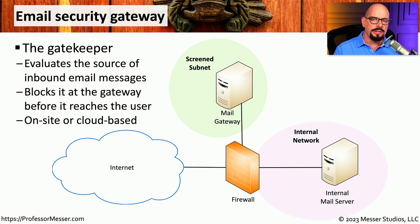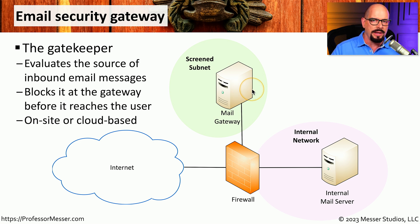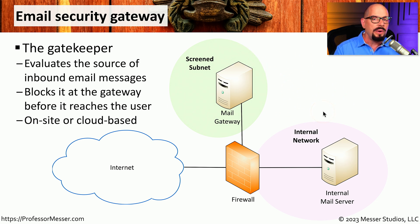Email is a very popular vector for attacks — we can send information in an email to get someone to click a malicious link, or attach malicious software to the email message itself. For that reason, many organizations monitor all of their email transactions and look for any type of malicious software or information contained within those messages. Most networks will have a mail gateway where all mail passes through a firewall and then to an internal mail gateway for scanning before being forwarded to an internal mail server. Many organizations have also moved that mail gateway into the cloud, where a powerful cloud-based email gateway collects information from hundreds or thousands of email systems to find malicious software more easily.